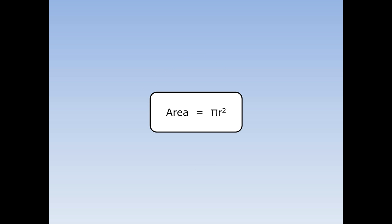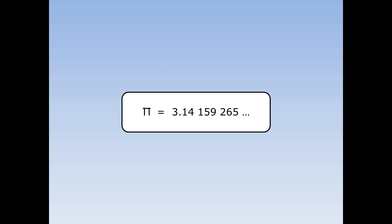To find the area, we use the formula pi r squared, where r squared means the radius times the radius. Pi is the special number that goes on forever. It's equal to 3.14159265, but we're going to use pi equals 3.14.